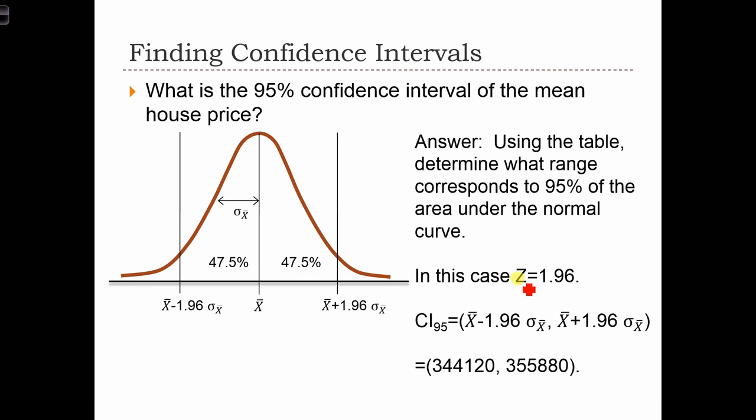So in this case, the z-score is 1.96. We just plug in the confidence interval, x-bar minus z standard error, x-bar plus z standard error. And we find that the confidence interval for 95% confidence is this. So we can be 95% sure that the mean house price is in this range.